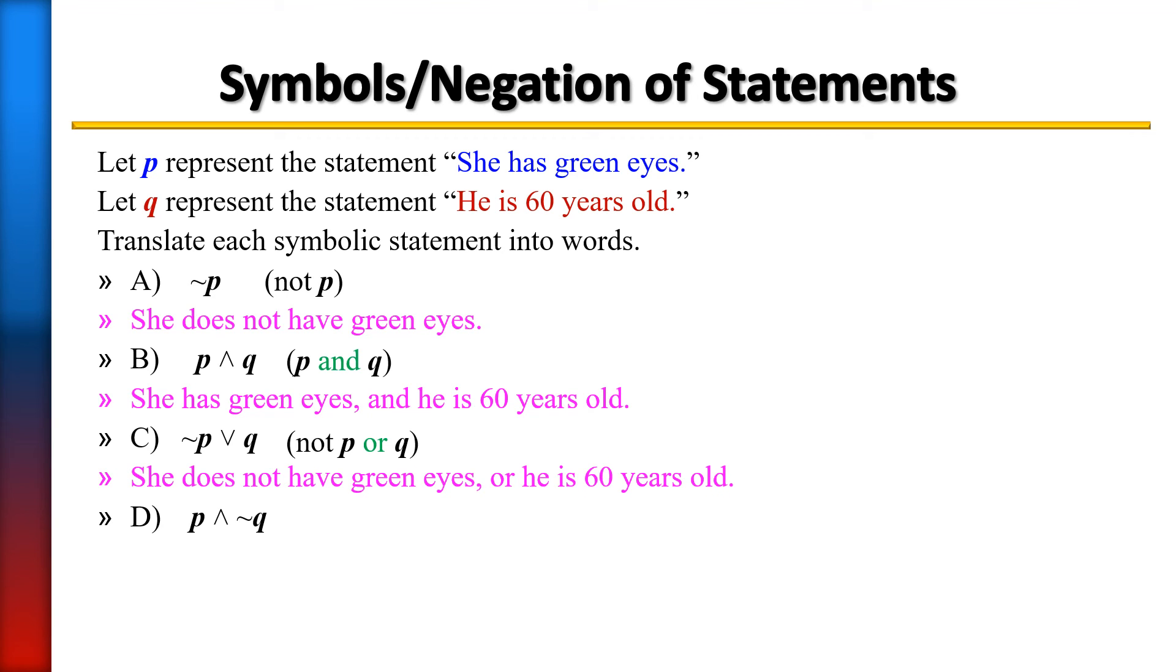Last one: P and NOT Q. So we would say P, then use the word AND, then negate Q. To negate Q, if Q is 'He is 60 years old,' the negation would be 'He is not 60 years old.'